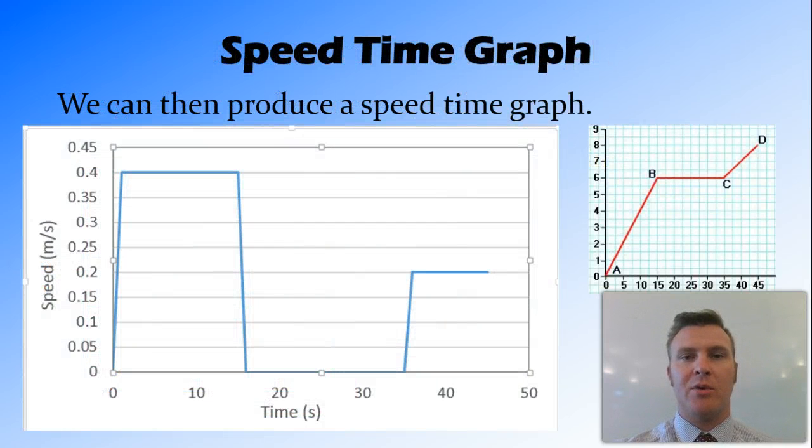From the information that we get from our distance time graph, we can create a speed time graph. And this is a graph that maps speed with relation to time. So I've made this one from the first graph, and you can see that from 0 to 15 seconds here, we're travelling at 0.4 metres per second.